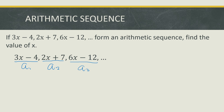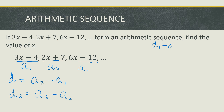We know that in an arithmetic sequence, we have a common difference. To get the difference of each term, we subtract the second term from the first term. For this to be a common difference, we also subtract the third term from the second term. We can use this idea to solve for x: a sub 2 minus a sub 1 is equal to a sub 3 minus a sub 2. They are equal.